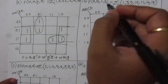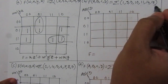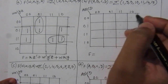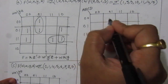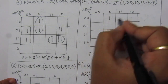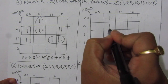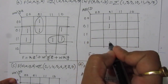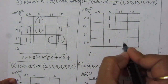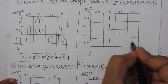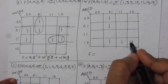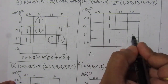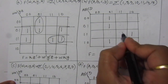In the next problem, we have this minterm expression. We place the values in the map: 0, 1, 2, 3, 4, 5, 6, 7, 8, 9, 10, 11, 12, 13, 14, 15 — filling in all the corresponding cells.